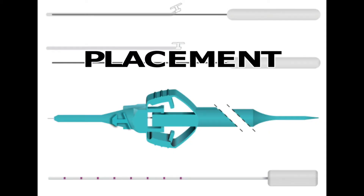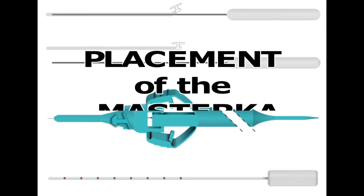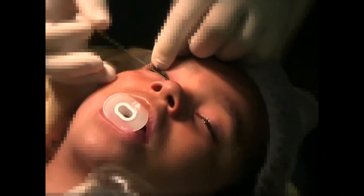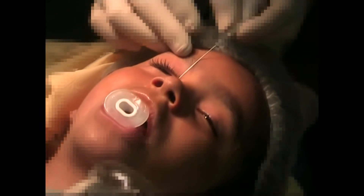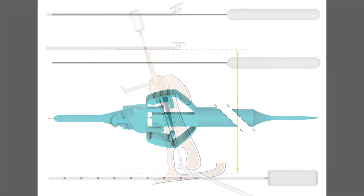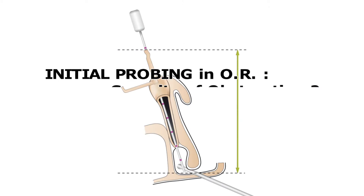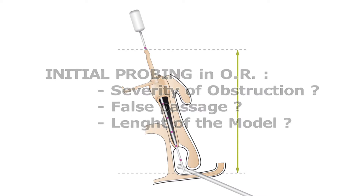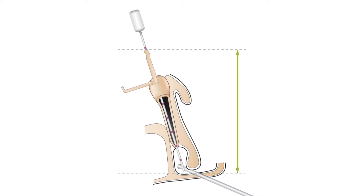Placement of the Master Ka requires two steps. An initial probing of the patient is done in the operating room under general anesthesia in order to determine the severity of nasal lacrimal obstruction. If this is a simple mucosal type of obstruction, then a Master Ka intubation is done using a pushed method of insertion with the metallic guide. The preliminary lacrimal exploration with probing is essential. It allows the surgeon to identify the location and severity of obstruction in order to avoid potential false passages and to choose the appropriate Master Ka length.